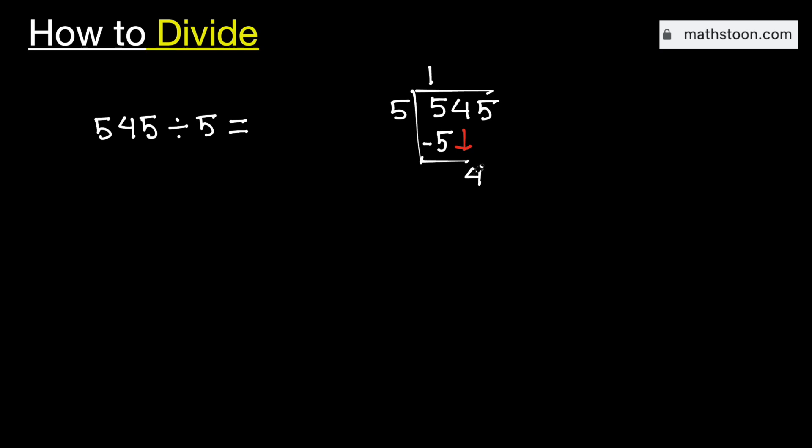But in this case, although 4 is less than 5, as we have brought down this number 4 here, we need to divide it. We know that 5 times 0 is 0. Subtract, we get 4.